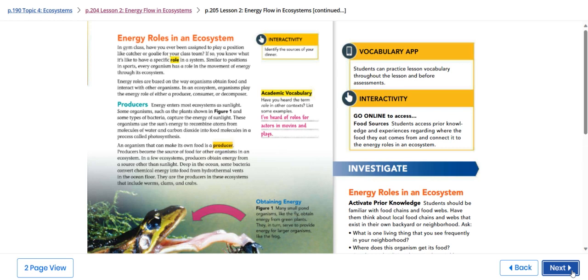Organisms play the energy role of either a producer, consumer, or decomposer. A producer is an organism that can make its own food. Producers become the source of food for other organisms in an ecosystem.